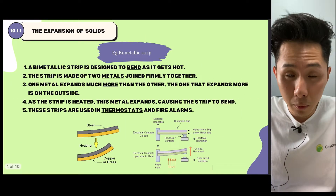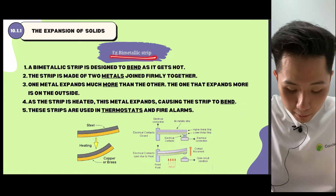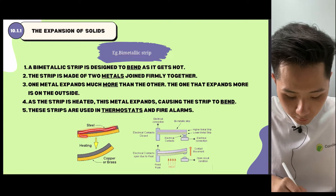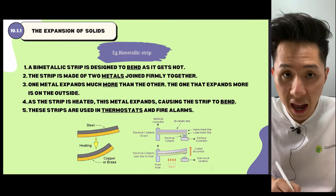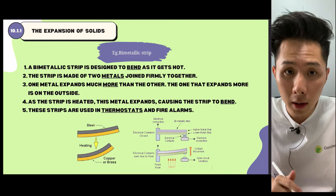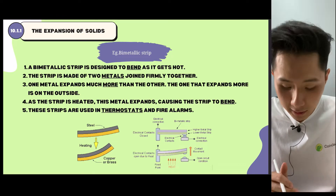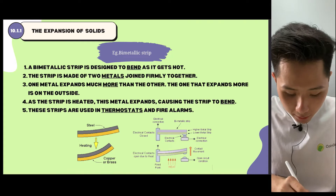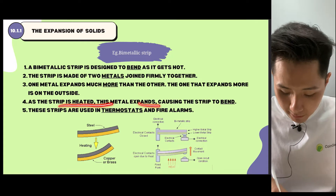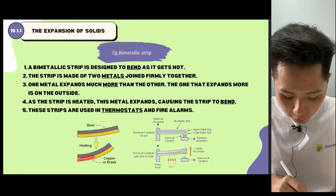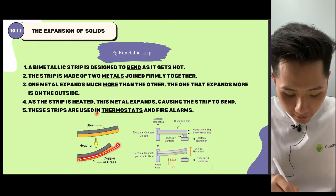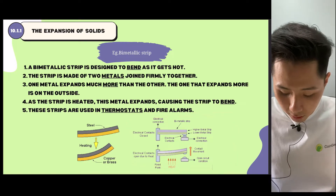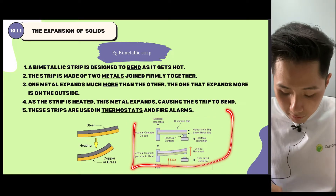The second example of thermal expansion in solid is the bimetallic strip. It is a metal strip that is built of two different materials, and one material is going to bend more than the other. When the strip is heated, the metal expands, causing the strip to bend. They are used in thermostats or even fire alarms.